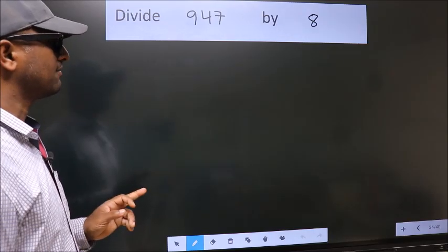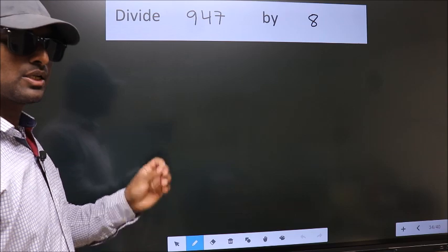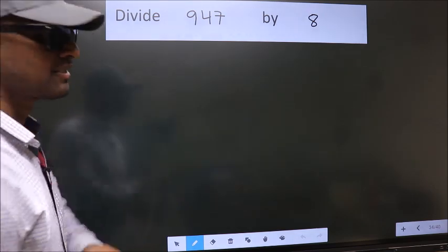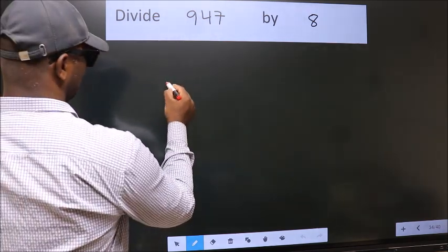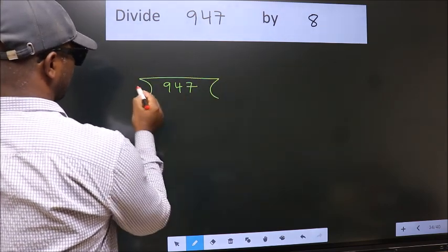Divide 947 by 8. To do this division, we should frame it in this way. 947 here, 8 here. This is your step 1.